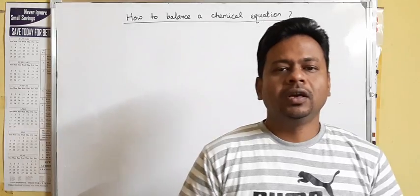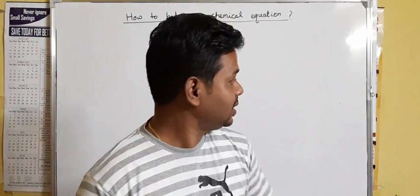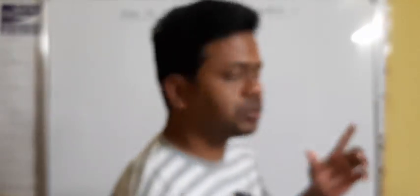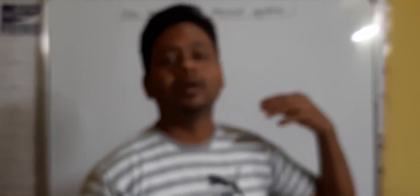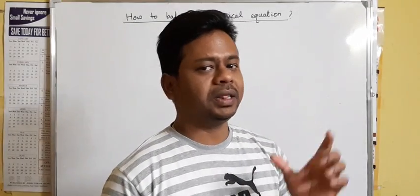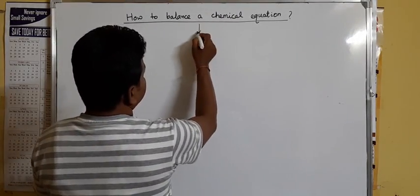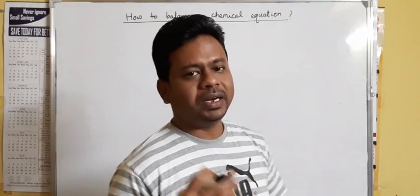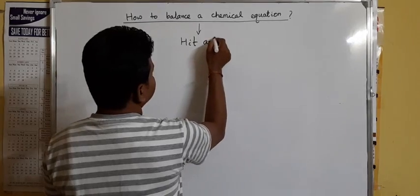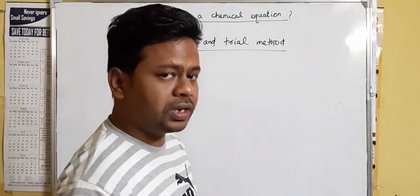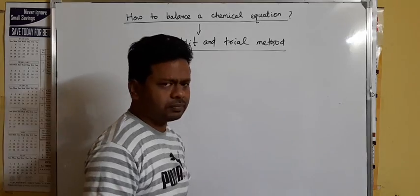Hello students, I'm back again. In this session we will discuss how to balance a chemical equation. As we discussed earlier, there are two types: unbalanced and balanced chemical equations. We make a balanced chemical equation using a method called the hit and trial method, also known as the trial and error method. Both are the same.